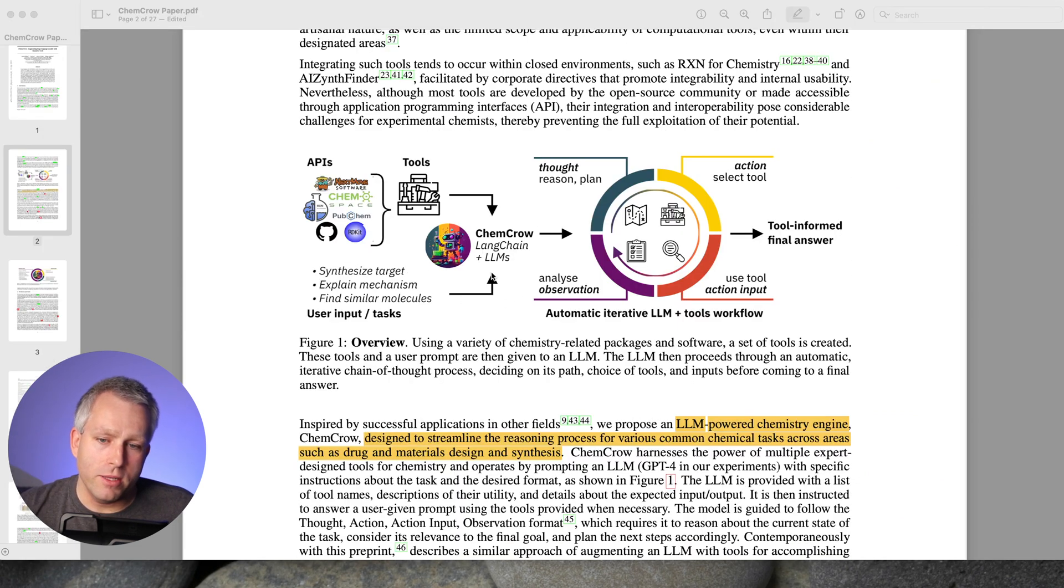In the ChemCrow model, the large language model pretty much acts like a human. Because when you hire a junior chemist, they don't know all these things. What they do is they use their brain to kind of make a plan. And they use tools to execute the small tasks that they came up with. That's exactly what large language models do. And that's why they are so powerful. Thanks for watching. I'll see you next video.